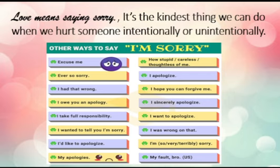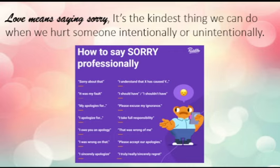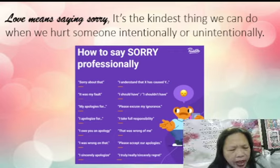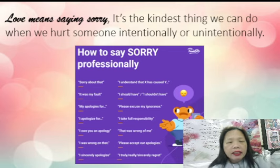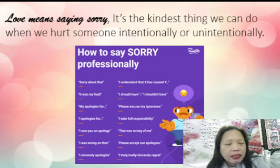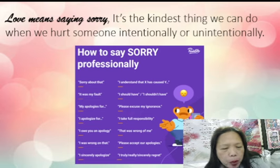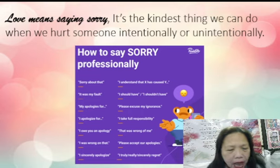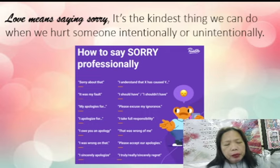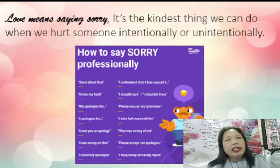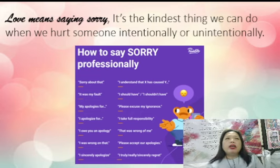Some say it professionally. How to say sorry professionally? We say: Sorry about that. It was my fault. My apologies for. I apologize for. I owe you an apology. I was wrong on that. I sincerely apologize. I understand that X has caused Y. I should have. I shouldn't have. Please excuse my ignorance. I take full responsibility. That was wrong of me. Please accept my warm apologies or sincere apologies. I truly, really, sincerely regret. But those are just words. If we owe someone an apology, how do we make things right?